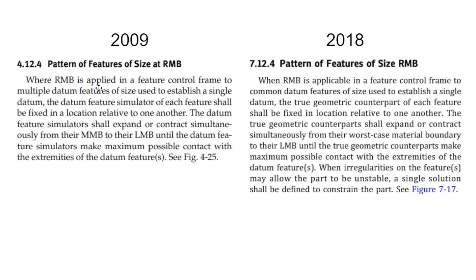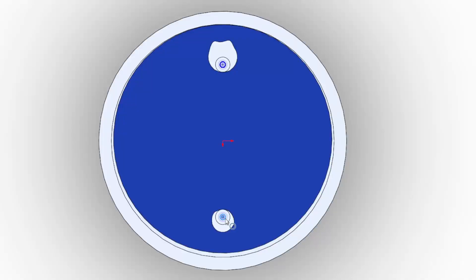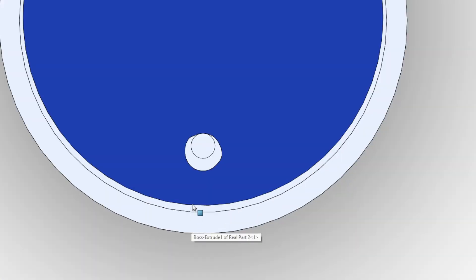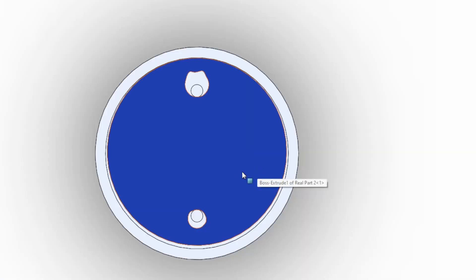If we read the paragraph where RMB is applied, the datum feature simulators shall expand and contract simultaneously from their MMB to their LMB. So you've got two pins that are simultaneously expanding in this case until they make full contact with or fully constrain the part. In this case, the pins will make contact—one point of contact here, one point of contact here—and that fully restrains the part.